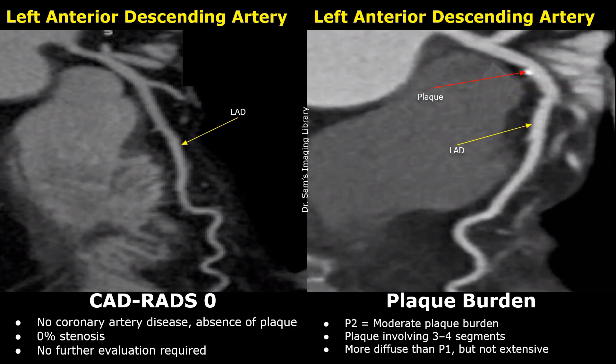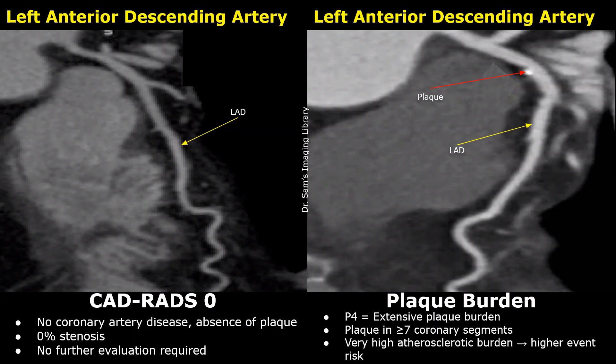P2 is moderate plaque burden, given when plaques are present in three or four segments. P3 is severe plaque burden, given when there are plaques in five to six segments. P3 is considered high risk for coronary events even if the CADRADS score is 1. P4 indicates extensive plaque burden, involving seven or more segments, referring to very high atherosclerotic burden and a higher cardiac event risk.